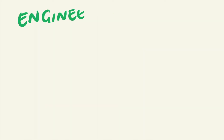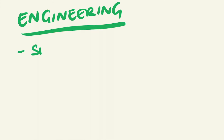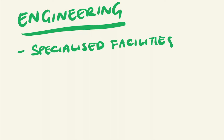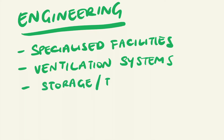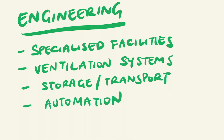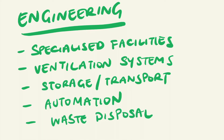Engineering controls include having specialized isolation facilities for those working in the laboratory setting, having ventilation systems such as negative pressure and safety cabinets, having specialized storage and transport of biological agents, automating equipment, and having adequate waste disposal such as sharps containers and biological hazard bags.